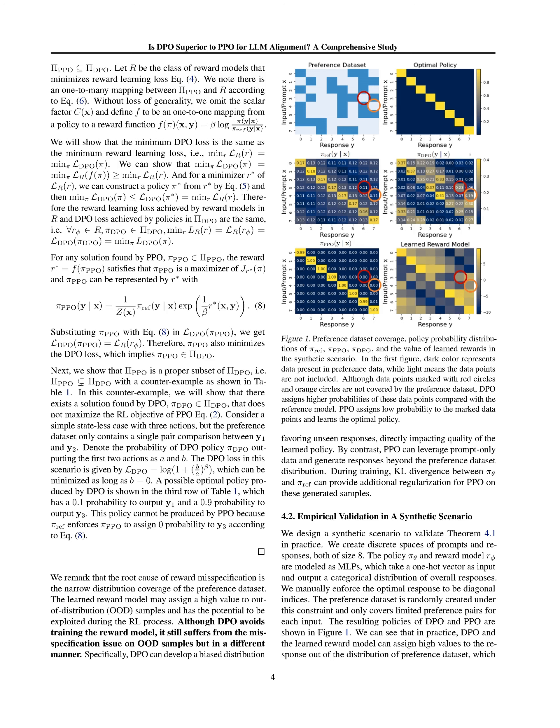We show theoretical issues with the DPO training objective and its susceptibility to out-of-distribution data. Through experiments, we confirm that improving the alignment between model outputs and the preference dataset can enhance DPO performance.